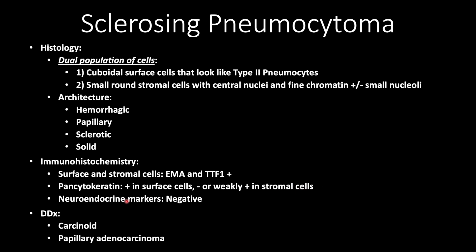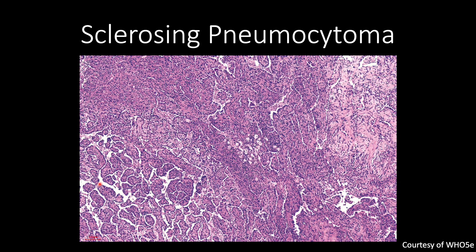The neuroendocrine markers will be negative, and that's important because your differential includes carcinoid, where neuroendocrine markers will be positive, and papillary adenocarcinoma, which you wouldn't have this dual population of cells where only the surface cells stain positive for cytokeratin.